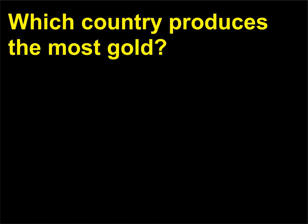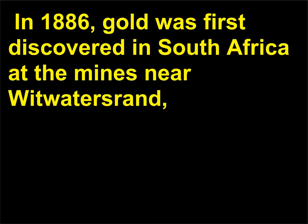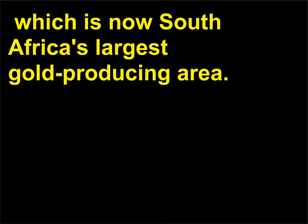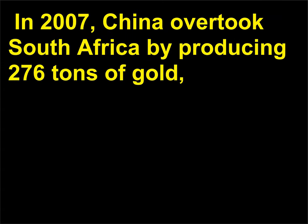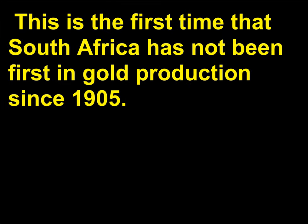Which country produces the most gold? South Africa's gold mines yield 28% of the world's gold annually. In 1886, gold was first discovered in South Africa at the mines near Witwatersrand, which is now South Africa's largest gold-producing area. In 2007, China overtook South Africa by producing 276 tons of gold, beating South Africa for the title of biggest gold producer by just 4 tons. This is the first time that South Africa has not been first in gold production since 1905.